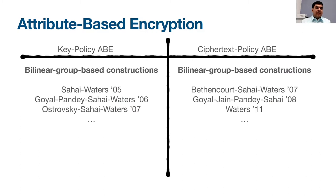We have a long sequence of exciting works achieving great milestones in both the key policy and ciphertext policy settings. In key policy, starting with Sahai and Waters 2005, then Goyal, Pandey, Sahai, Waters 2006, and so on. In ciphertext policy, starting with Bethencourt, Sahai, Waters 2007, followed by Waters 2011, and so on. These works progressively achieved highly expressive access policies such as NC1 or DFAs, strong adaptive security, and very good ciphertext and key sizes. But all these constructions are in the bilinear map setting.